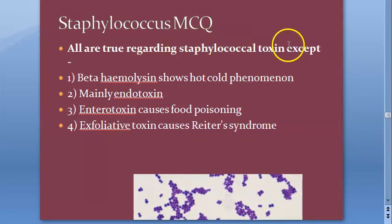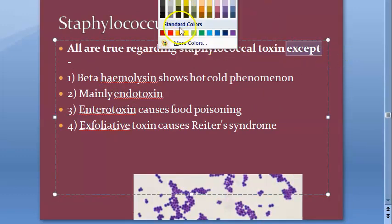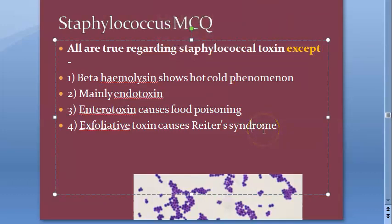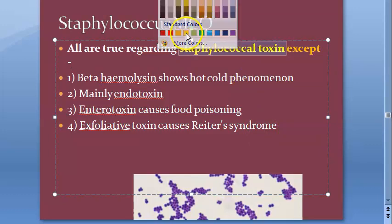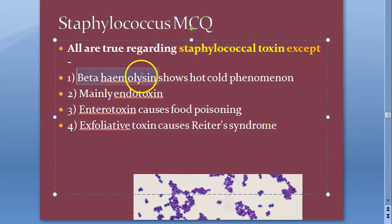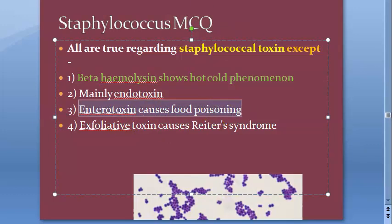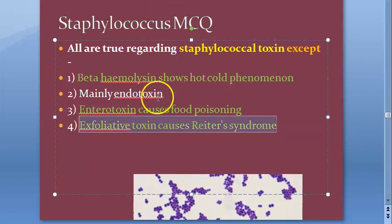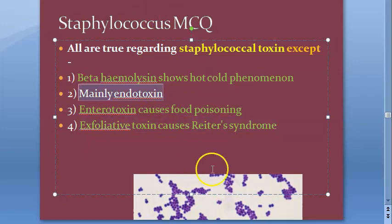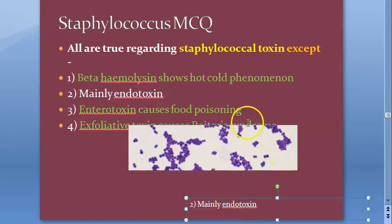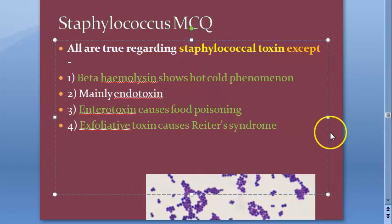All are true regarding staphylococcus toxin except — this is an except question, look for the wrong statement. Beta-hemolysin shows hot-cold phenomena (correct). Enterotoxin causes food poisoning (correct). Exfoliative toxin causes scalded skin syndrome (correct). They are not endotoxins — staphylococcus mainly makes exotoxin. Remember that.